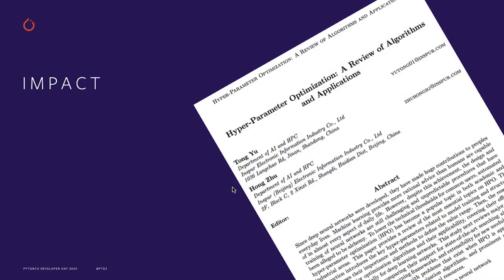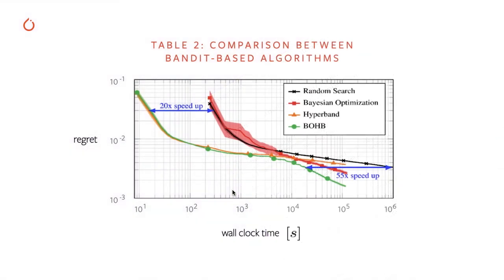Let's take a look at the impact of how this works. We looked at a hyperparameter optimization paper that looked at the review of the algorithms and applications, and found that if you compared doing a random search with Bayesian optimization compared to hyperband and Bayesian optimization with hyperband, it could provide almost a 20 times speed up. And this advantage persisted at the long time frames as well and could increase actually to up to a 50 plus times speed up. So the hyperparameters make a great difference to what the overall performance is.